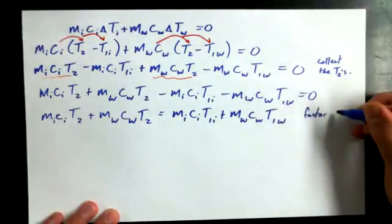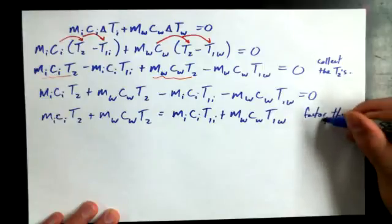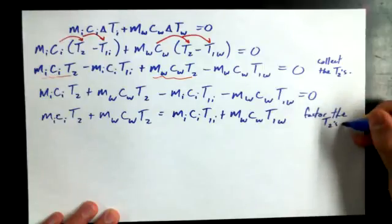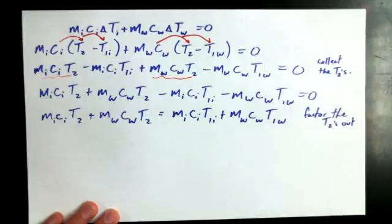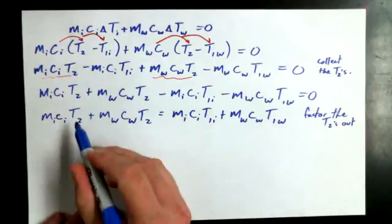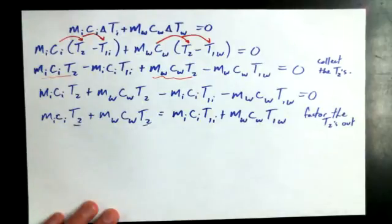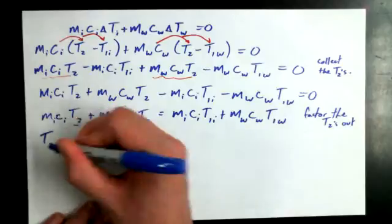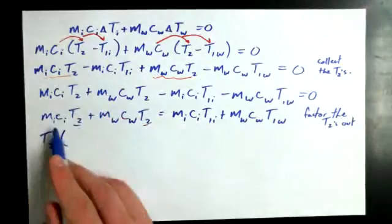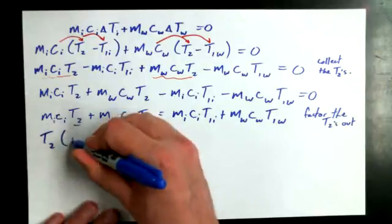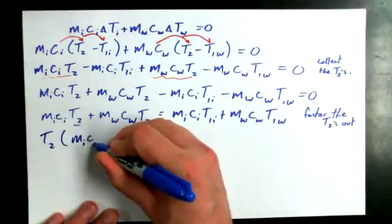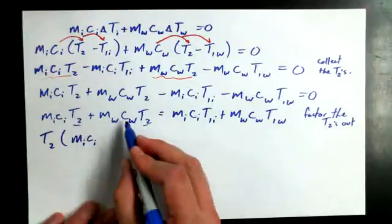Now, factor the T2's out. I know, it's crazy, right? It looks like a bunch of gibberish. Very important idea, though. I want to factor the T2's out of these two terms over here. T2 comes out front, and it leaves behind. Well, what's left behind if I factor the T2 off of that one? M-I-C-I and M-W-C-W.